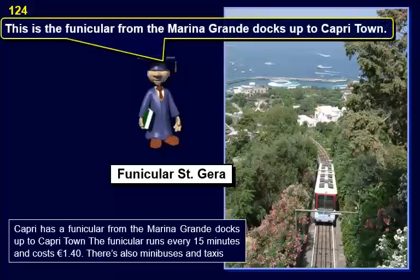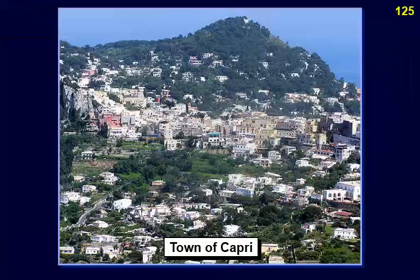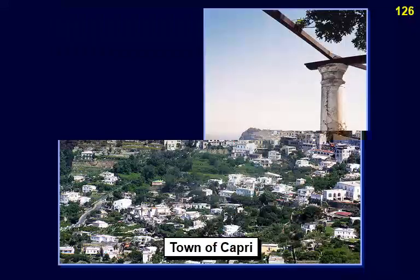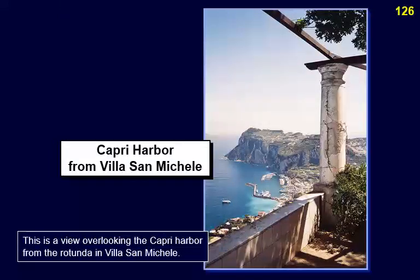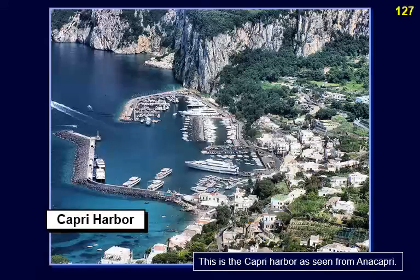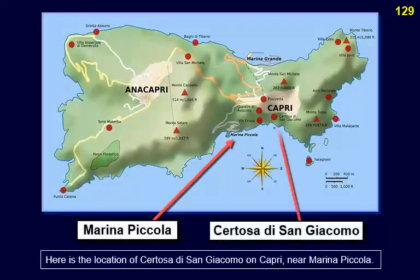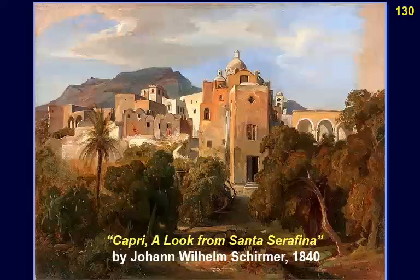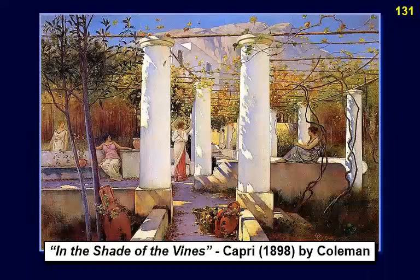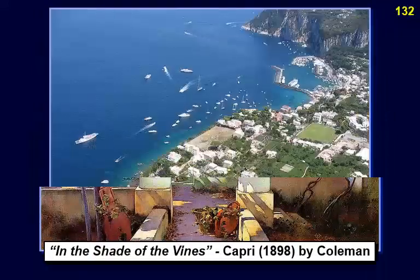Capri has a funicular from the Marina Grande docks up to Capri town, running every 15 minutes and costing €1.40. There are also minibuses and taxis. This is a view of the town of Capri, and a view overlooking the harbor from the Rotunda in Villa San Michele. The Certosa di San Giacomo is a Carthusian monastery on Capri, founded in 1363.